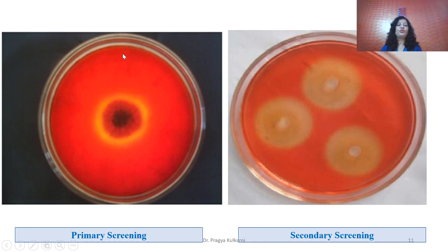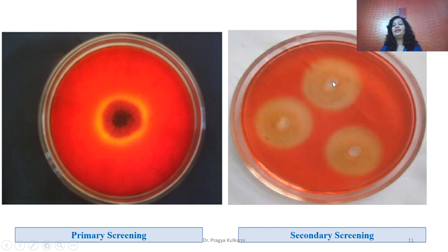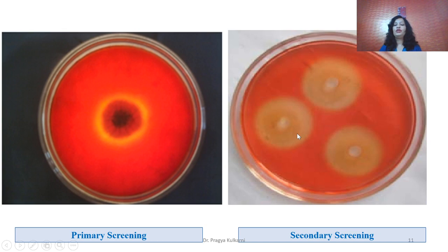This picture shows primary screening. The fungal culture is growing in the center of the petri plate and showing a zone of clearance around the growing colony, in contrast with the Congo red-stained area which shows the presence of xylan substrate. The second picture shows secondary screening, where three wells are cut and filled with culture filtrate after centrifugation. After incubation, a clear zone of clearance is visible, indicating the production of xylanase enzyme in the supernatant.